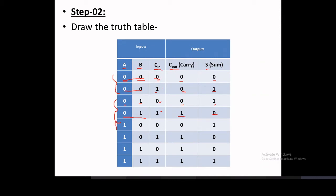For the last case with A=1, B=1: carry can be zero or one. For one, one, zero: one plus one plus zero gives sum=0, carry=1. For one, one, one: one plus one plus one gives sum=1, carry=1. This is the complete truth table for addition of three bits with two outputs — sum and carry.